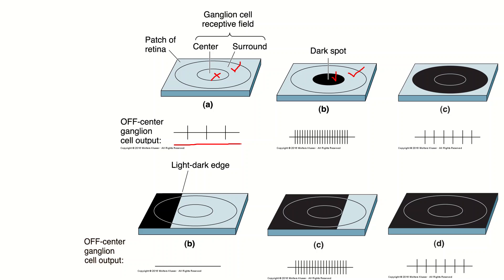We can do a similar comparison for figure c. The center matches the optimal firing rate, which is having a dark spot in the center. The surround however does not match the optimal firing rate which has light in the surround, so we put an X there. One check mark and one X means we expect a medial firing rate, which again we do see. You can take each of these examples and continue to compare them to the optimal firing rate for on and off center cells to determine the approximate firing rate.